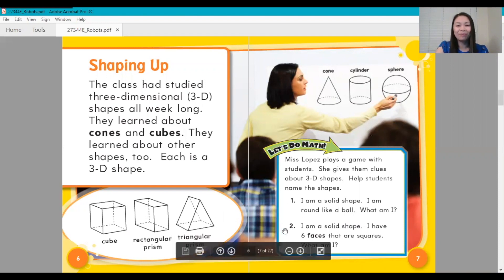Number two: I am a solid shape. I have six faces that are squares. What am I? The answer is cube.